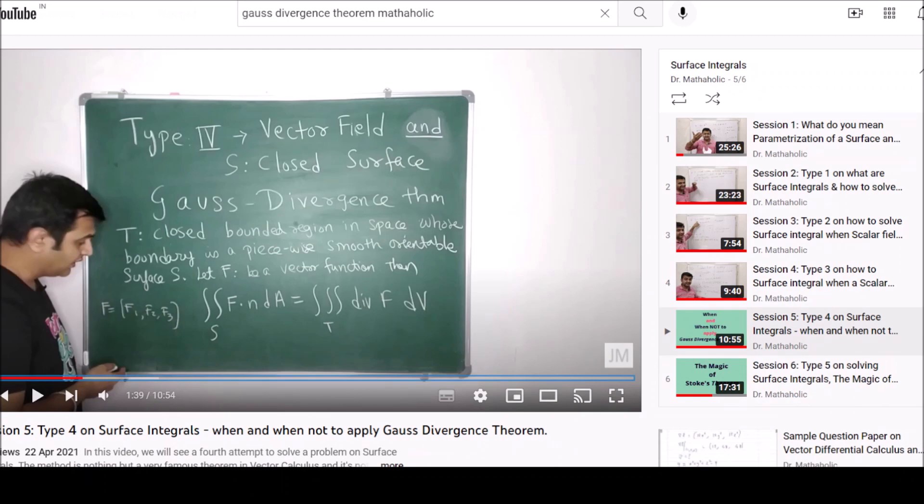So this is what that session is. The theorem says if you have a closed and bounded region, this connects surface integrals and the triple integral. The surface integral of a vector field is nothing but the triple integration of the divergence of that.